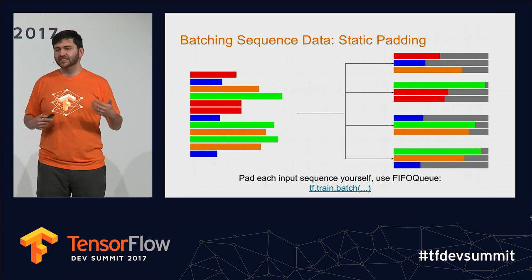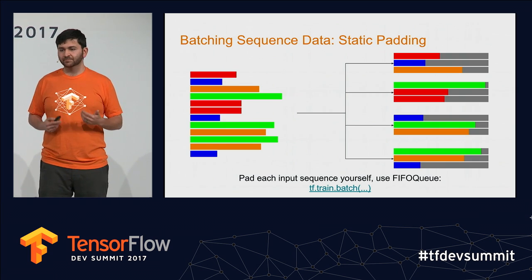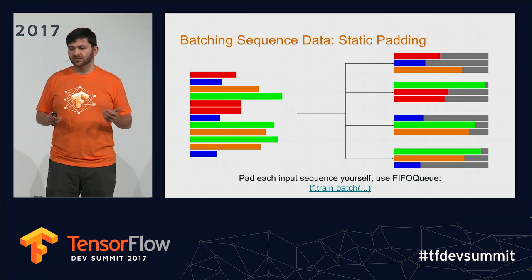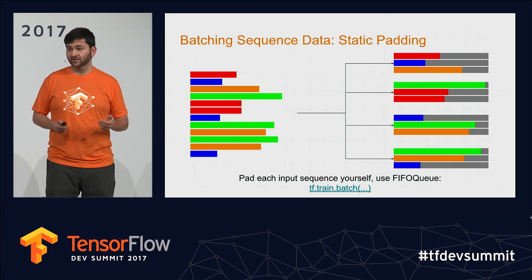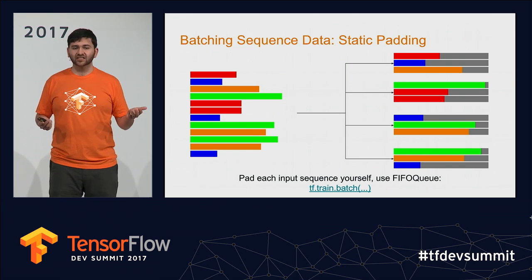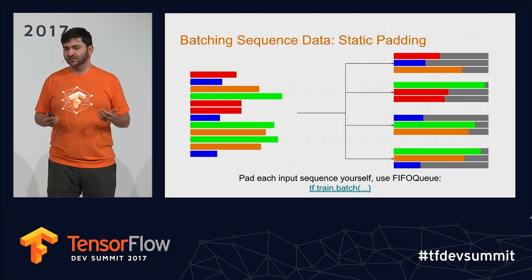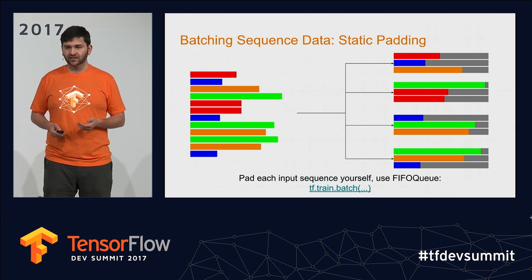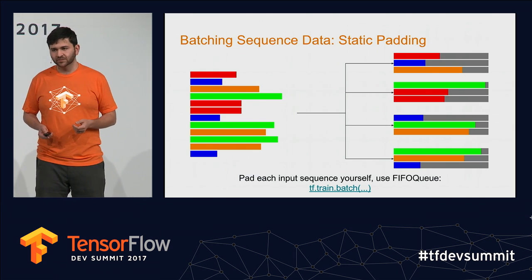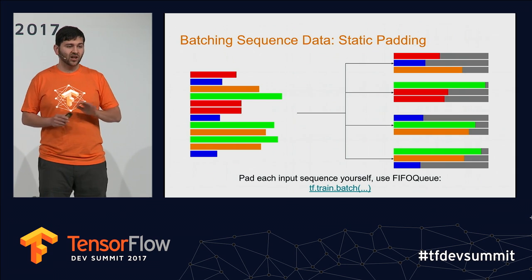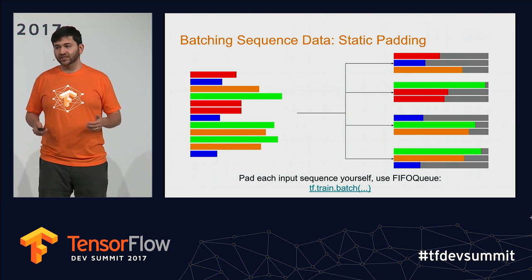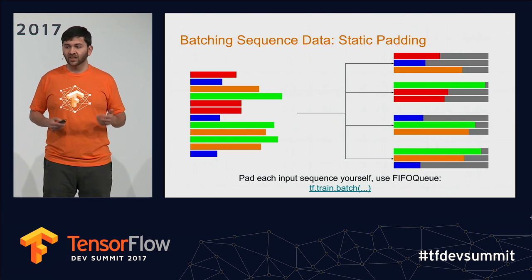Now that you can read in a sequence one at a time, you need to be able to batch it. One way is to do the padding yourself: pick a maximum sequence length and pad each input to that maximum length, then pass it into tf.train.batch. The major negatives of this approach are that you need to know the longest possible sequence length beforehand, and you'll always pad to that maximum length — wasting both space and time during training.